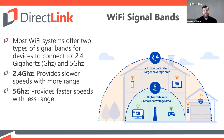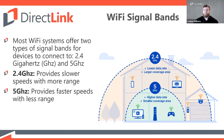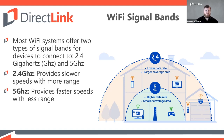The 5 GHz band is best for devices closer to your router that can take advantage of its faster speeds — think gaming consoles, smart TVs, or home computers. It's also ideal for higher bandwidth activities like online gaming, video calling, or streaming 4K Ultra HD movies, because it delivers faster speeds than the 2.4 GHz band. Older devices may only be able to connect to the 2.4 GHz band while newer ones can connect to both — similar to older radios only receiving AM and not FM.